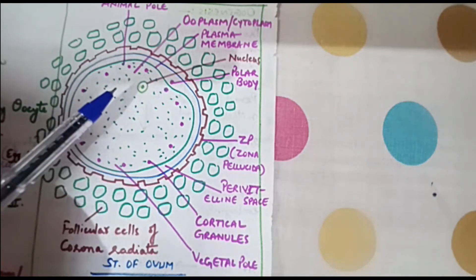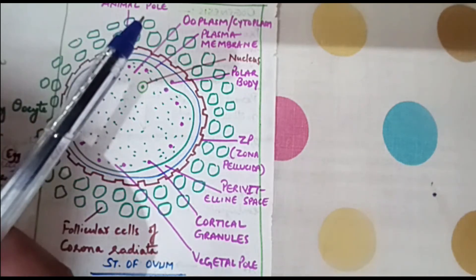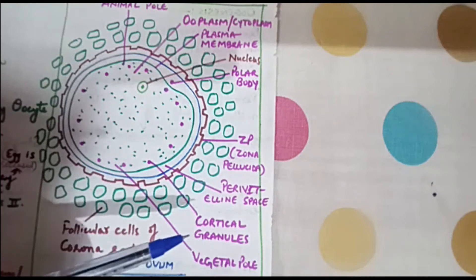Also, ovum has two poles. One pole is the animal pole and the other pole is the vegetal pole.